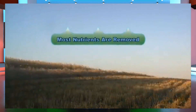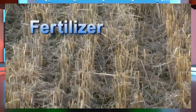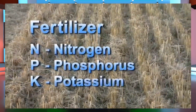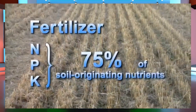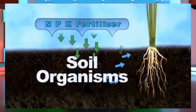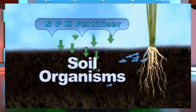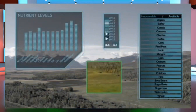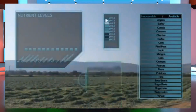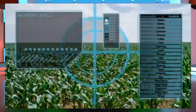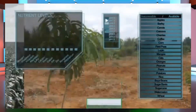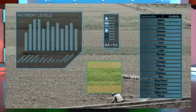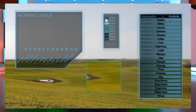Since plants need nutrients and harvesting inevitably depletes the soil, farmers are required to apply fertilizer. Typically NPK fertilizer blends are used, since these three are by far the largest component of soil nutrients found in plants. Unfortunately, high concentrations of these fertilizers can drastically reduce the population levels of the soil organisms that help supply these and other nutrients to the plant.